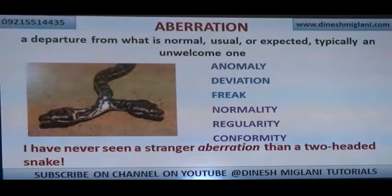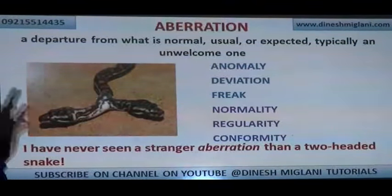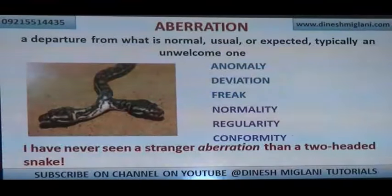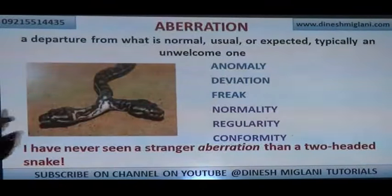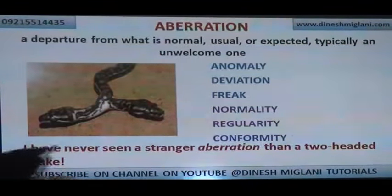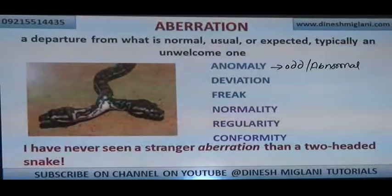First one: aberration. As you can see in the picture, there is a two-headed snake. It is not very common to find such a thing — something which is very odd, not expected, and which you might feel is weird. Such a thing is aberration: a departure from what is normal, something unusual or unexpected. The synonym is anomaly — anything which is odd or abnormal is an anomaly.